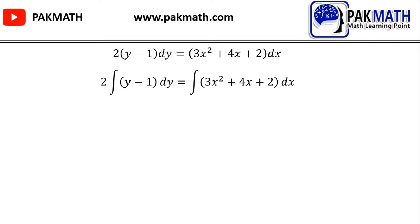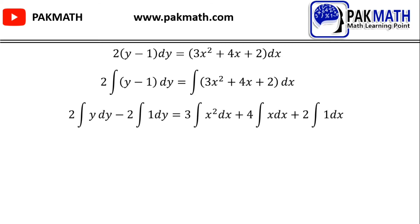Now we will take the integration of each part separately. So we get: 2∫y dy − 2∫1 dy = 3∫x² dx + 4∫x dx + 2∫1 dx.